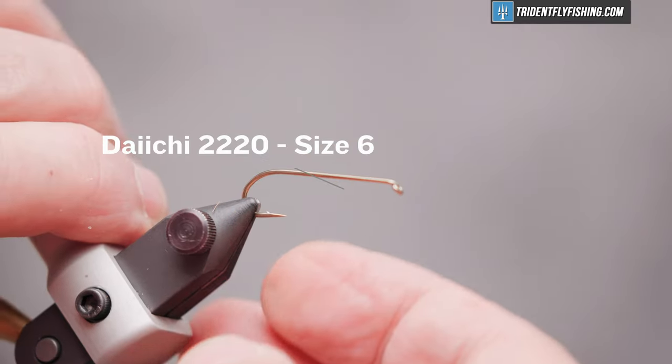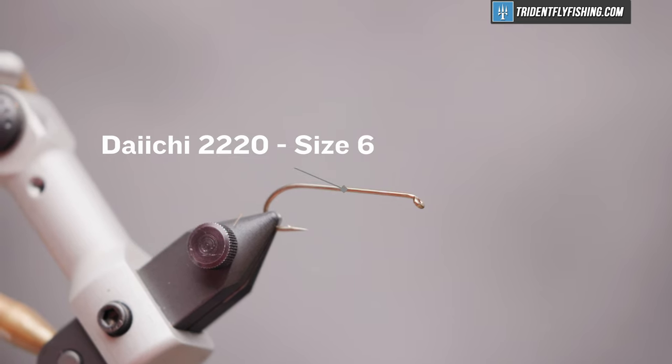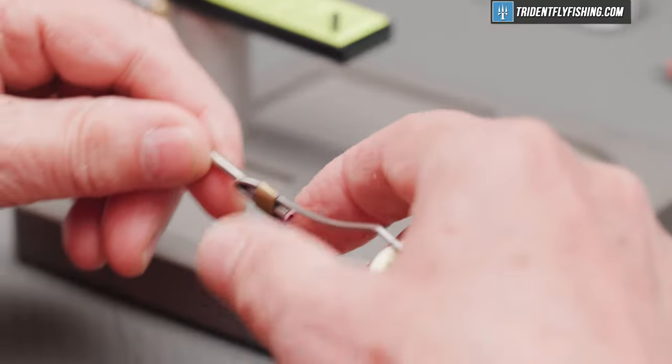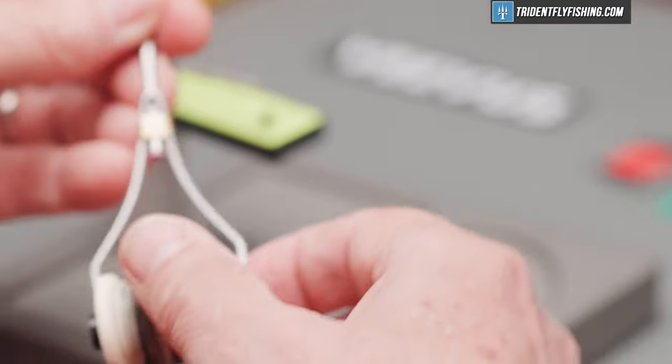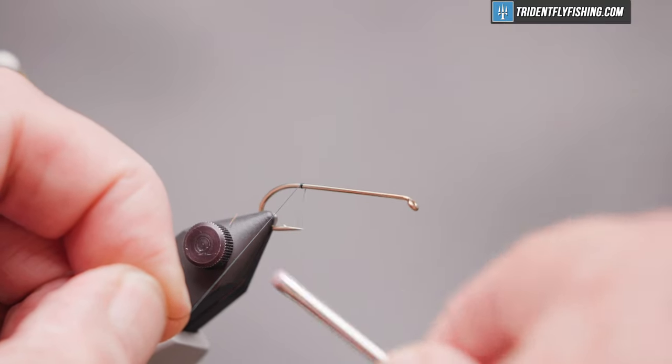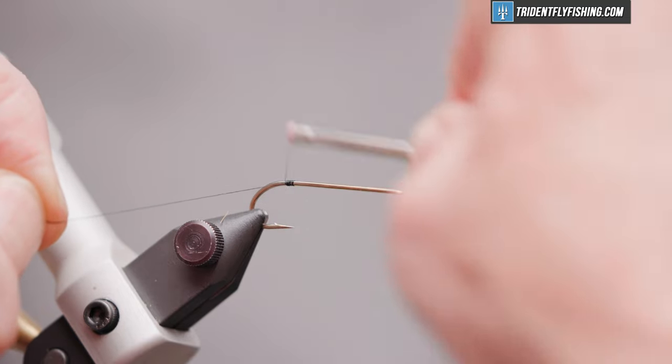The hook we're going to use today is a Daiichi 2220 size six, their four extra long streamer hook, and the thread is Danville's six-aught in black. We'll start our thread at the point of the hook and form our jam knot where we're going to tie in our first material, which is the rib.